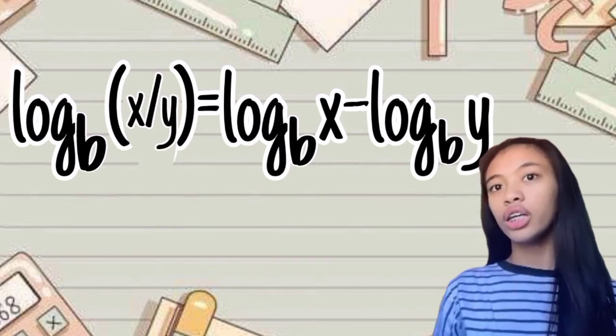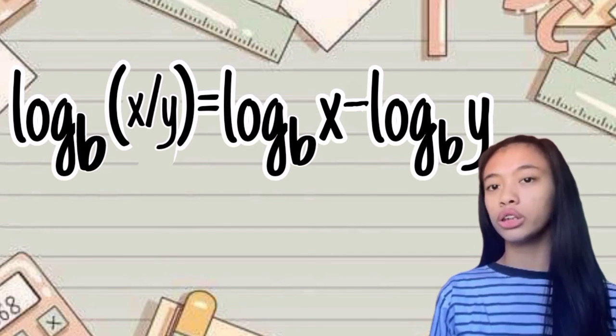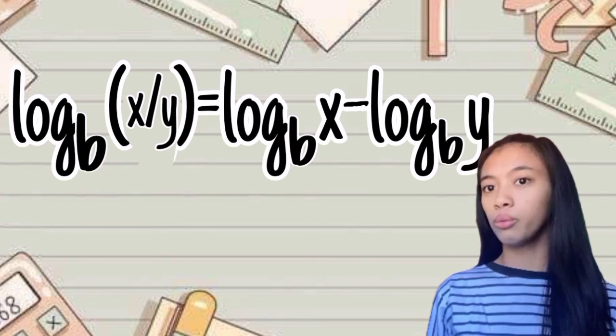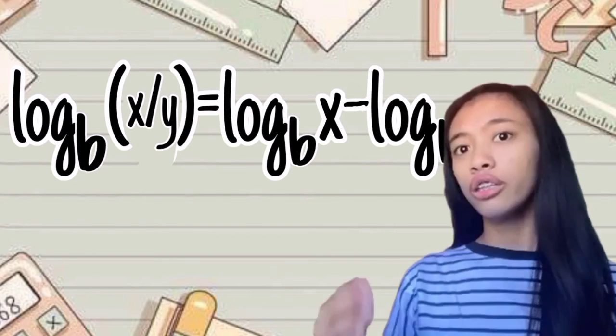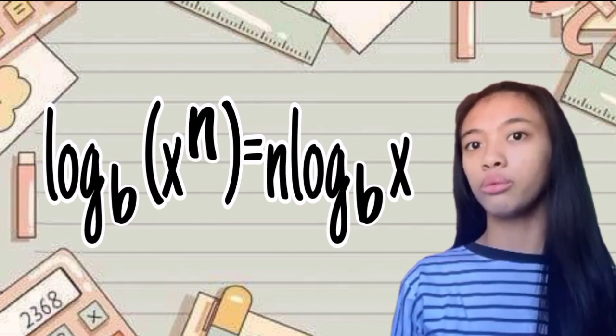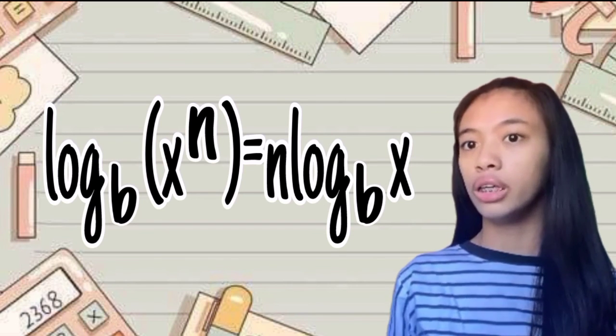The second one is logarithm x over y with base b equals logarithm x with base b minus logarithm y with base b. And the third one is logarithm x raised to n with base b is equal to n logarithm x with base b.